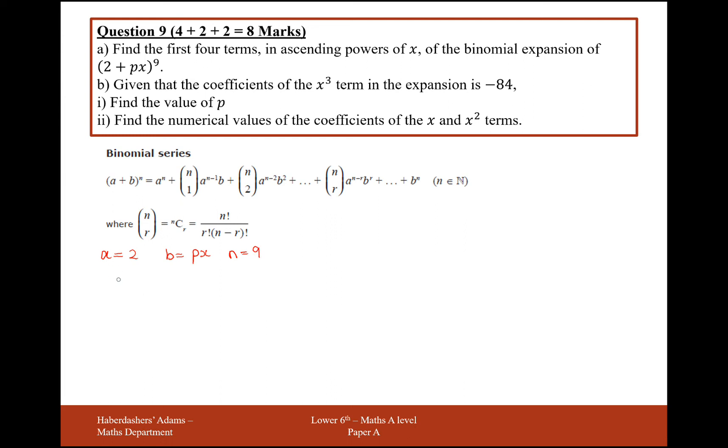So what I'm going to do now is substitute in a, b, and n into the formula above here, and I'm going to stop when I get to the first four terms. Okay, so (2 + px) to the power of 9 equals 2 to the power a, so that's a, that's 2, n is 9, so 2 plus, and 9 choose 1, that's n choose 1 there, and then it's going to be 2 to the power of 8, because 9 take away 1 is 8, and then times that by b, so that'll be px.